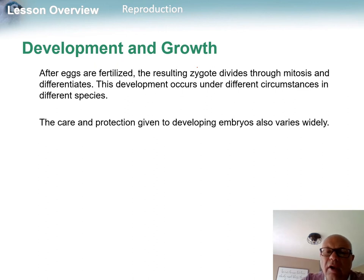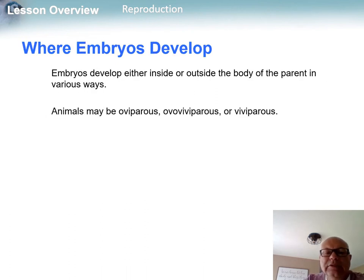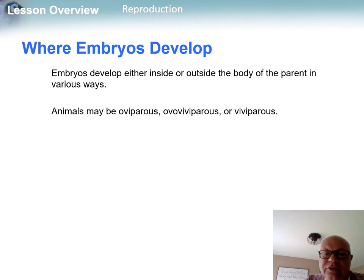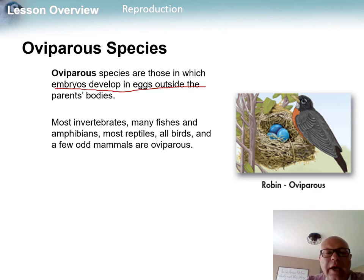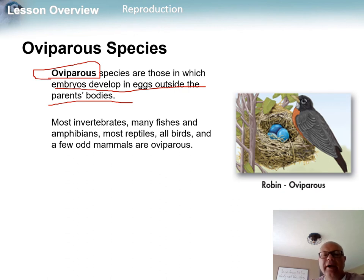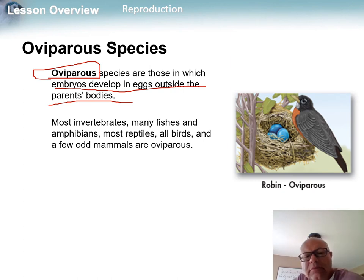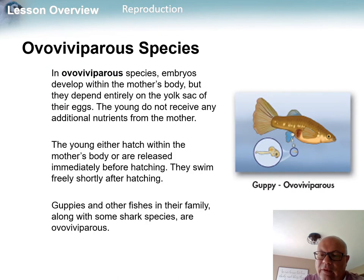After an egg is fertilized, the zygote divides through mitosis and differentiates. Embryos develop either inside or outside the body. Species called oviparous have embryos that develop in eggs outside the parent's body. This includes all birds, a few mammals, most invertebrates, and many fish, amphibians, and reptiles.